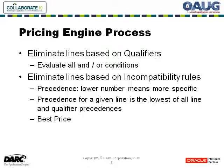So now that we have our list lines selected, now is when the qualifiers are applied. These are at the line level in the case of modifiers and header level for both modifiers and price lists, where you can define any number of AND or OR conditions as appropriate. Once the lines and lists are chosen, the next thing that has to happen is eliminating lines based on incompatibility rules. This is mostly applicable in modifiers, where you may have more than one modifier line or discount that may be applied to a given line. Generally, the application wants to apply only one of those, and it has two ways to do that: either by precedence or best price. With precedence, a lower number wins, and the precedence for a given line is determined by looking at the lowest of the line precedence and the precedence assigned to any qualifiers attached to that line.